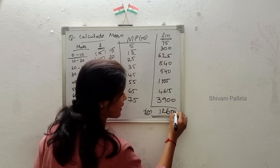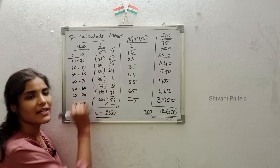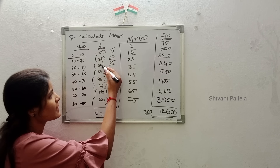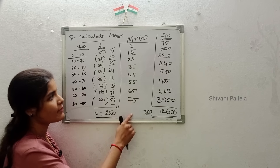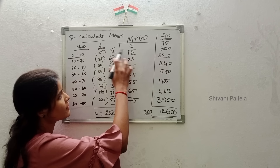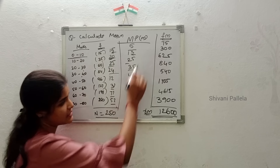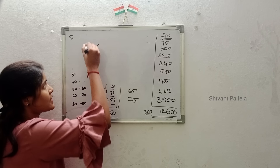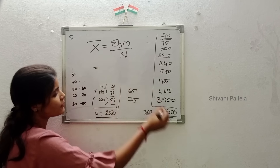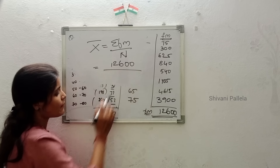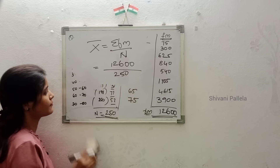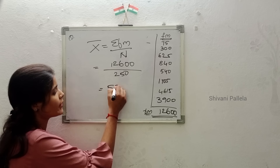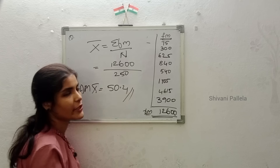The total of F×M is 12,600. Like this you need to calculate — they will give marks and frequency, you calculate the individual frequencies as shown, then find midpoints, then F×M. Now substitute into the formula: arithmetic mean x̄ equals σfm divided by n. FM total is 12,600 divided by n which is 250, giving 12,600 ÷ 250 equals 50.4. So x̄ equals 50.4.